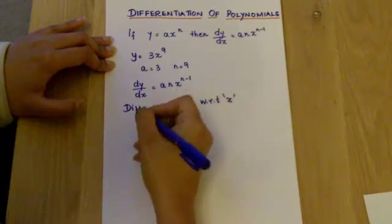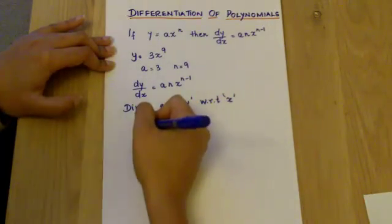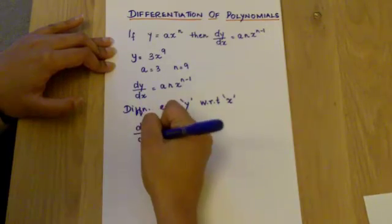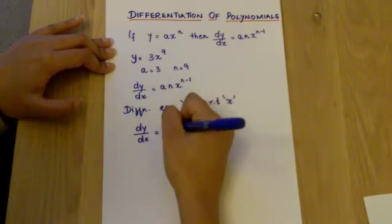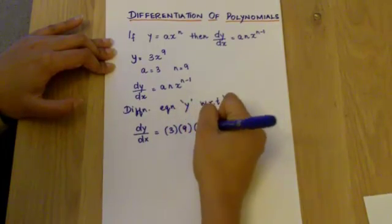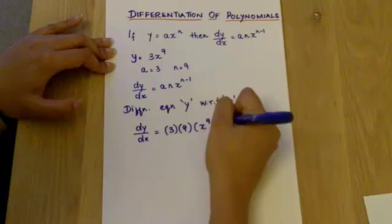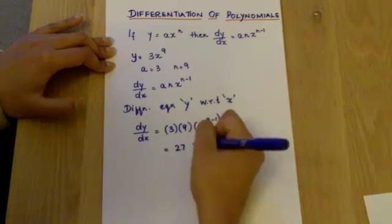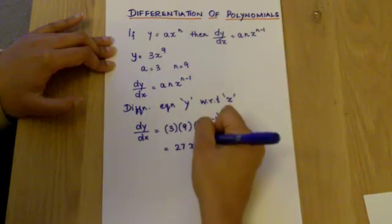Therefore, substituting the values into the formula we have dy over dx. We know that a is equal to 3, n equal to 9, x to the power of 9 minus 1. 3 times 9 is 27, x to the power of 8.